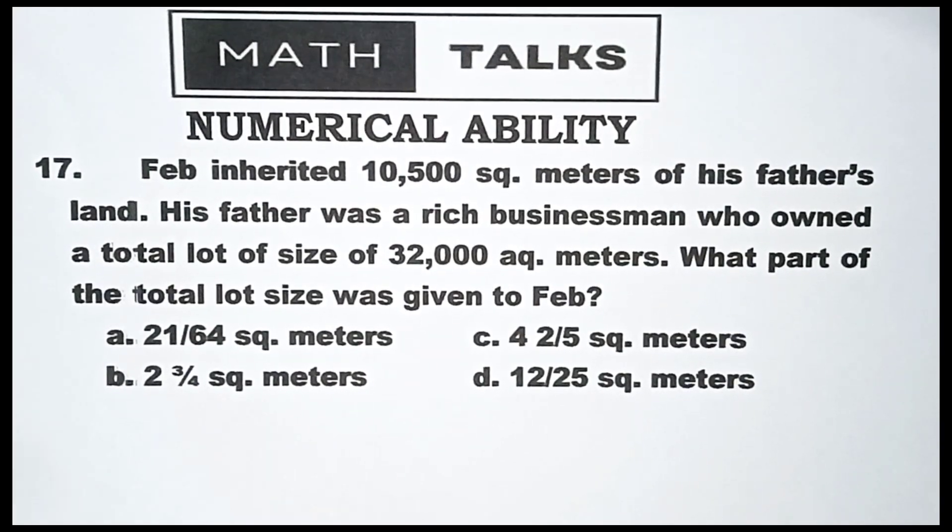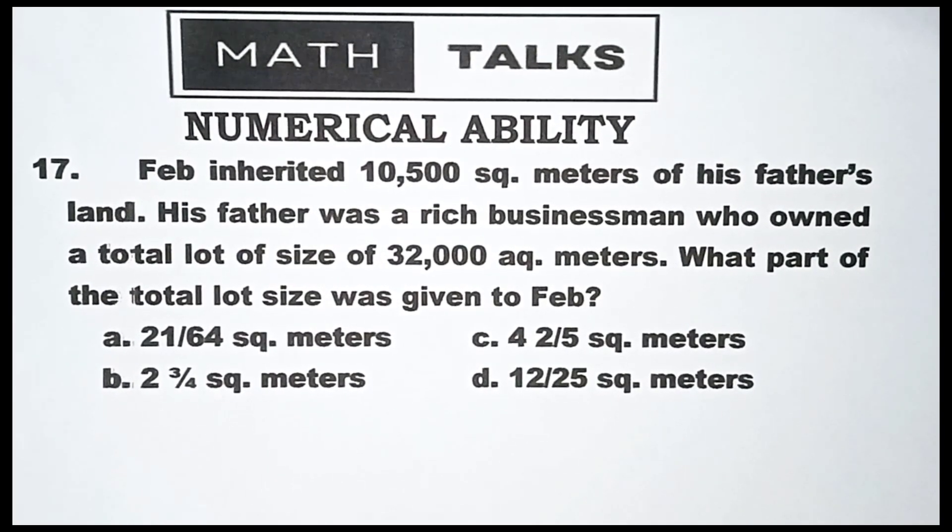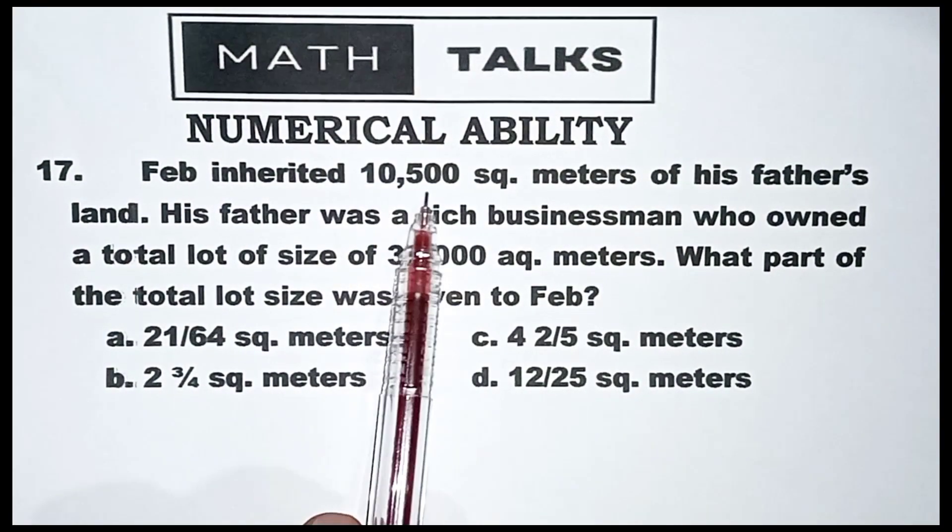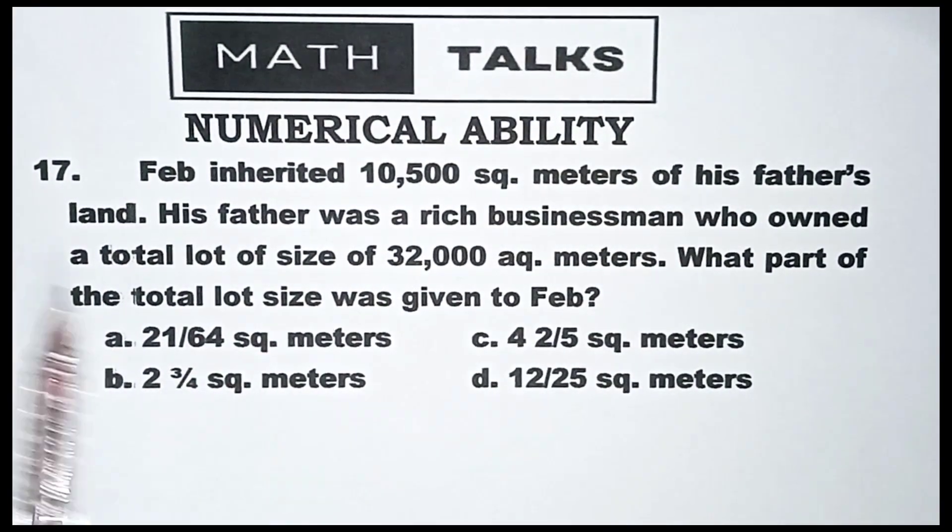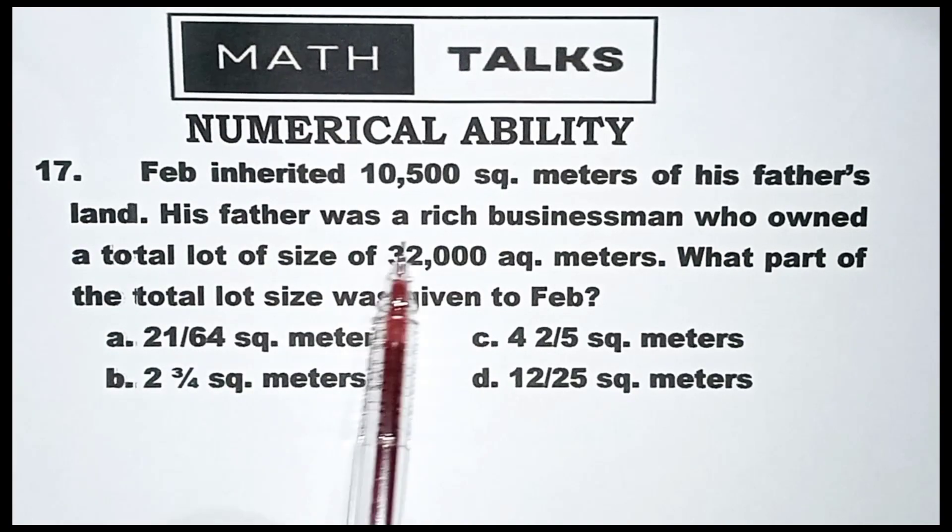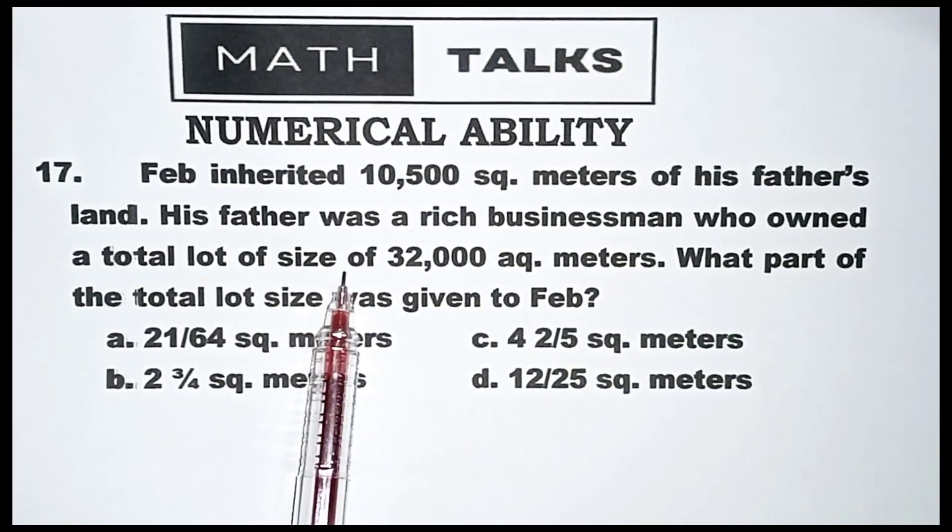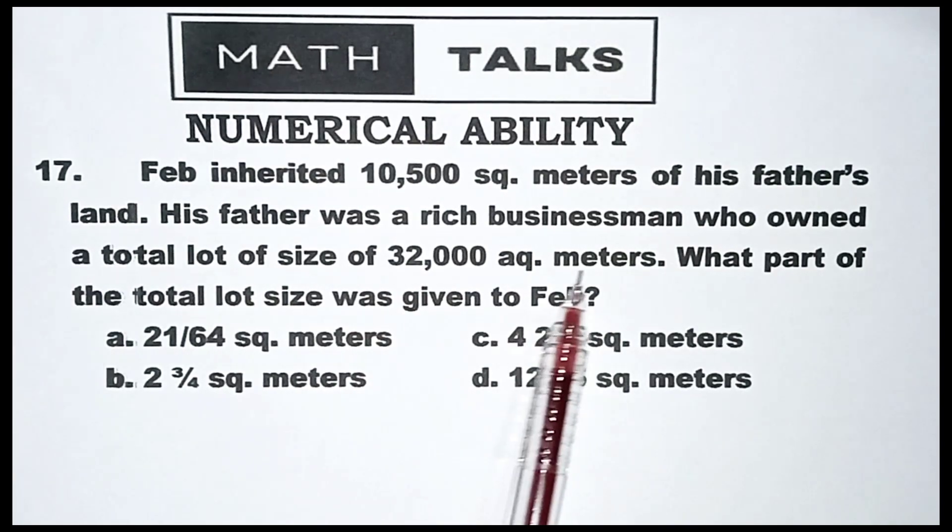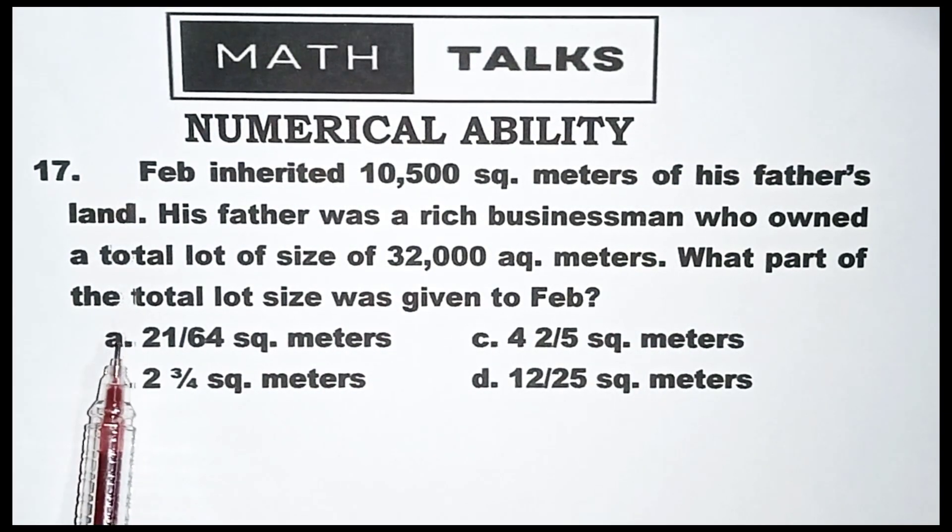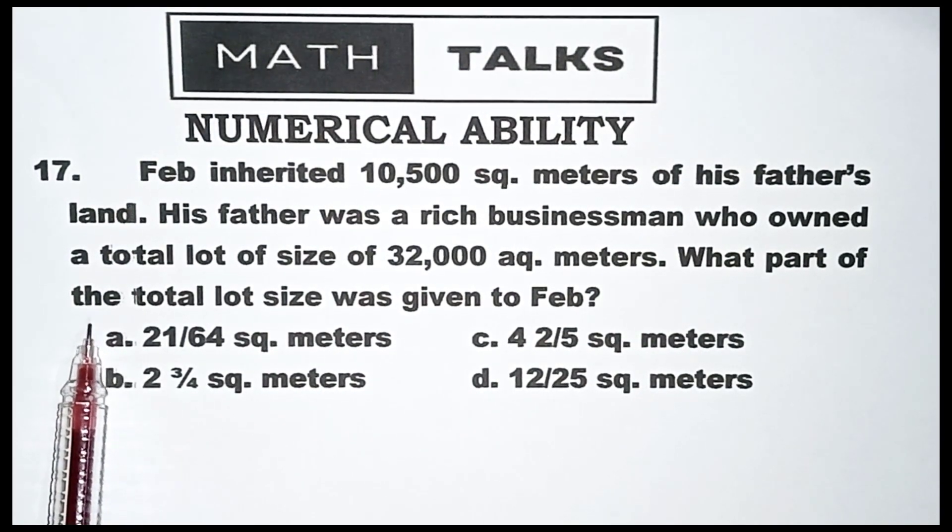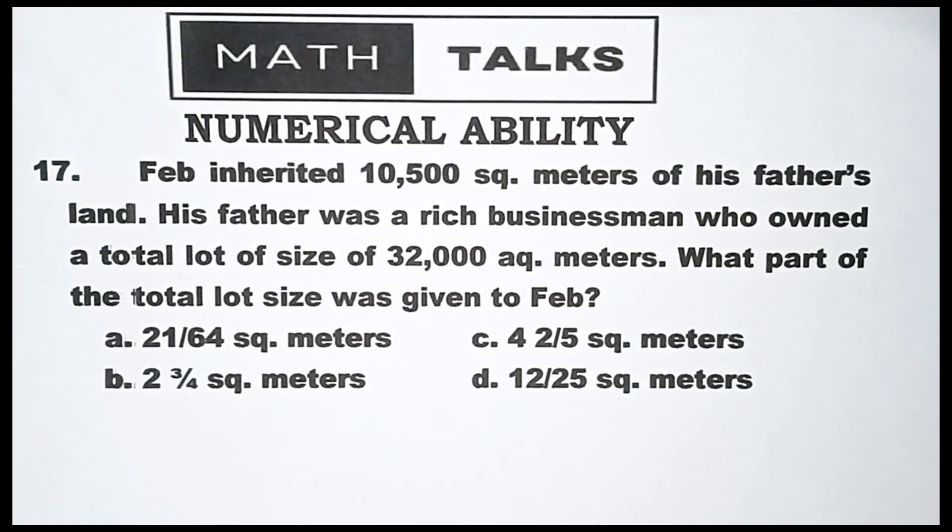Hi guys, number 17 from the numerical ability. Feb inherited 10,500 square meters of his father's land. His father was a rich businessman who owned a total lot of 32,000 square meters. What part of the total lot size was given to Feb?